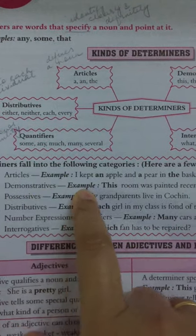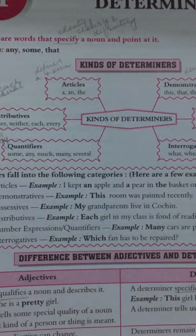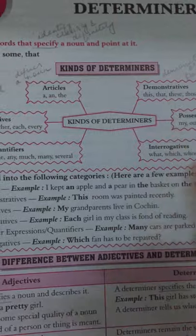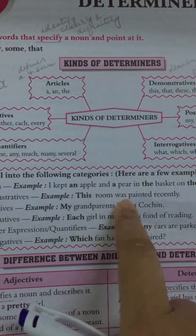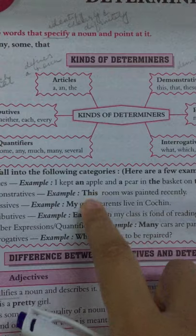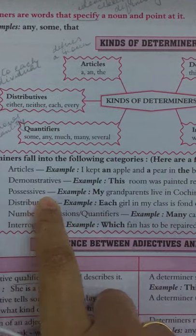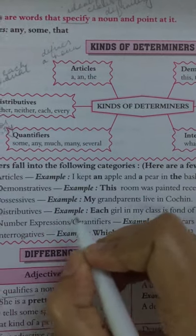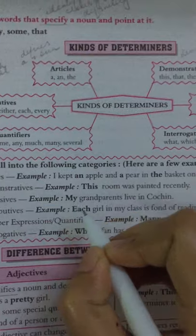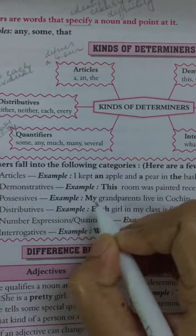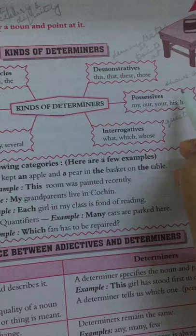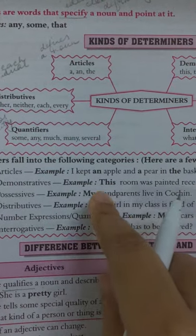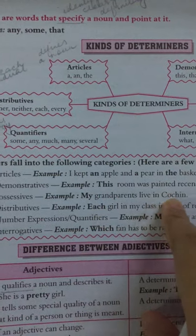For demonstratives: This room was painted recently. The word 'this' is a demonstrative pointing at the room. For possessives: My grandparents live in Cochin. The word 'my' shows possession — it shows ownership, that these are my grandparents.